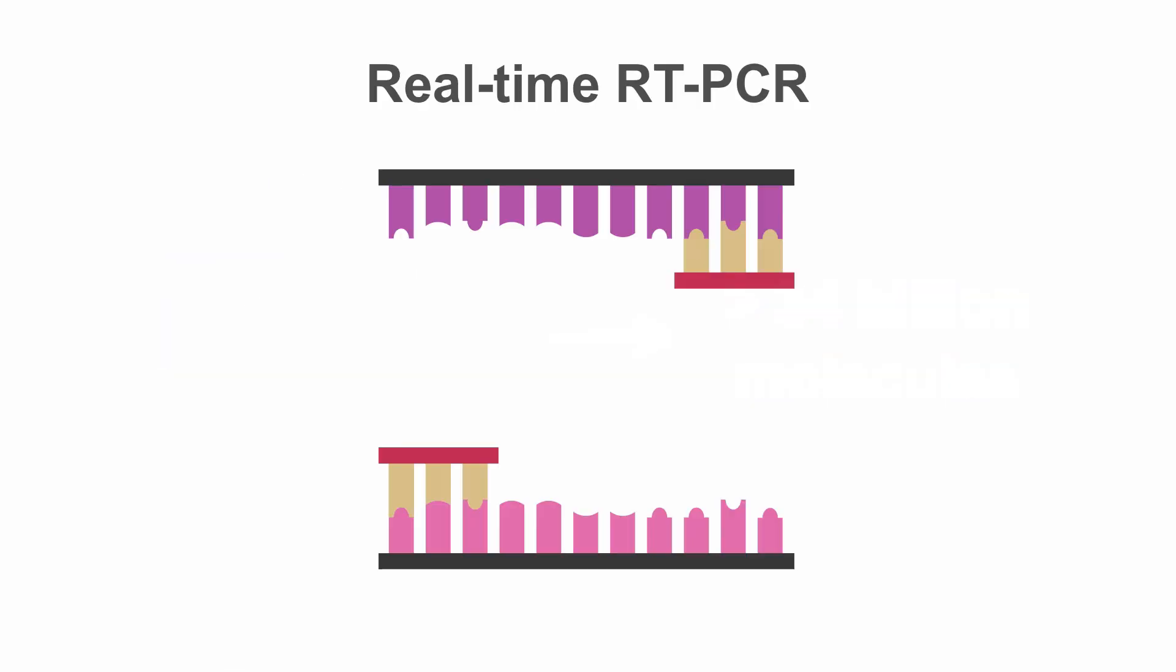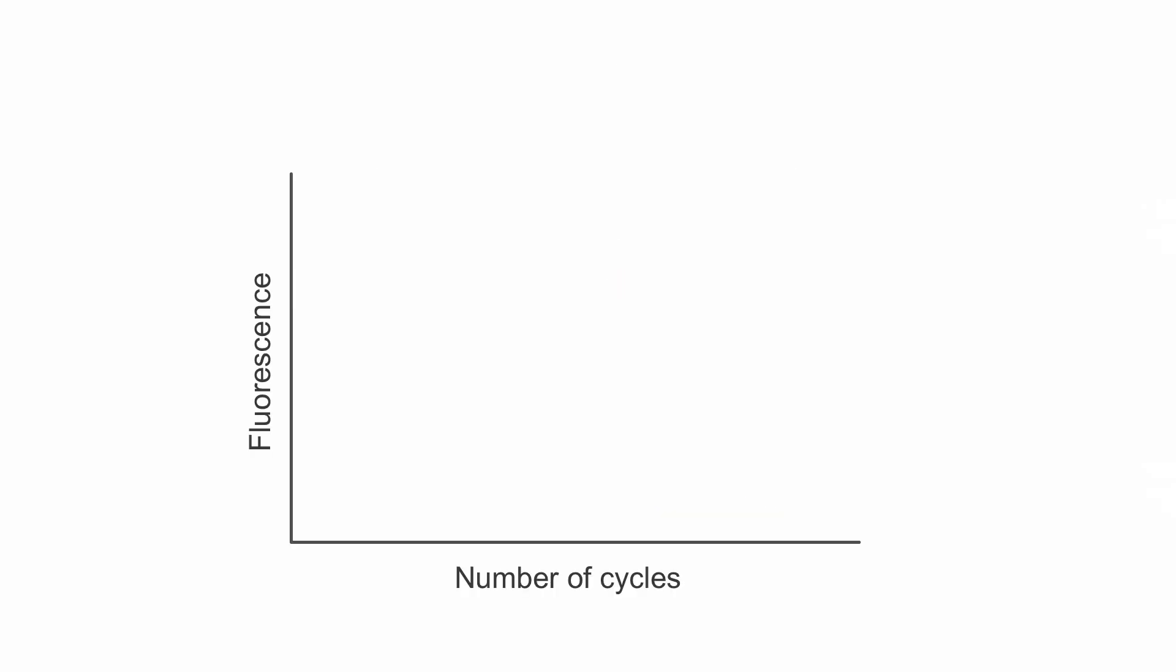In real-time PCR, a probe is added during the PCR process, which gives off fluorescence whenever a new DNA molecule is formed. The increase in viral cDNA can be followed in real-time by tracking the increase in fluorescence signal. When the level of fluorescence exceeds a certain threshold, we can be confident that the signal is significantly above the background level. The CT or cycle threshold value is the number of cycles required for the fluorescent signal to exceed that specific threshold value.